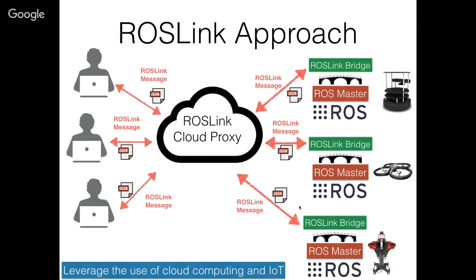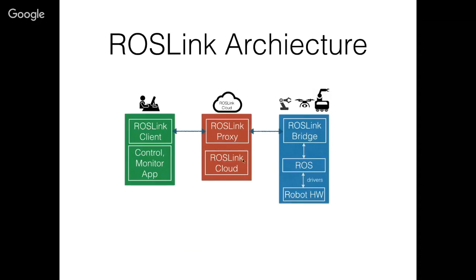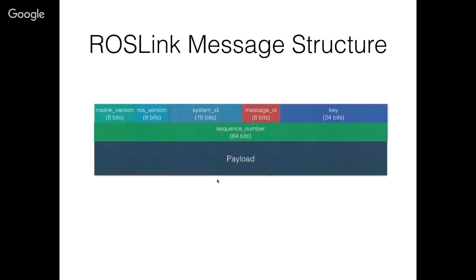This architecture leverages cloud computing and the IoT. Your robot runs ROS, which interacts with the drivers. The ROSLink Bridge — which I'll show you in Python code — interacts with ROS, reads all the topics, and publishes commands. It communicates using UDP or TCP protocol with the ROSLink Proxy, and the ROSLink Proxy communicates with the user via ROSLink Client using WebSockets. The bridge-to-proxy communication currently uses UDP but can be implemented with any transport protocol. To ensure this communication we defined a general message structure where every packet carries the ROSLink version, ROS version, system ID, message ID, key, sequence number, and payload.